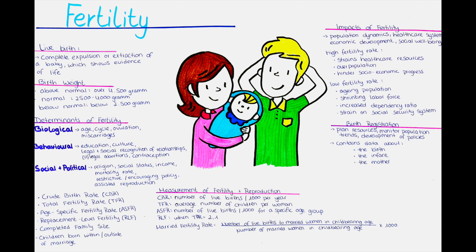Economics also play a role in fertility decisions. The cost of raising children, including education, healthcare, and other expenses, can influence fertility rates. In industrialized societies, the financial burden associated with child-rearing may discourage some couples from having larger families, while in agricultural societies, where children contribute to family labor, the economic benefits of having more children may be more pronounced. Technological advancements in contraception and assisted reproductive technologies, such as effective contraceptive methods and in vitro fertilization, may also impact fertility, providing individuals and couples with more control over their reproductive choices.